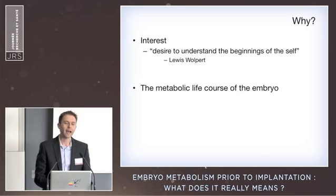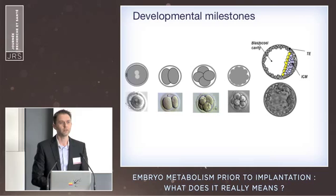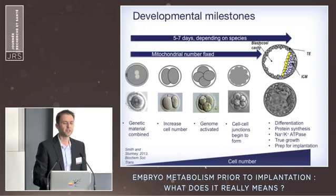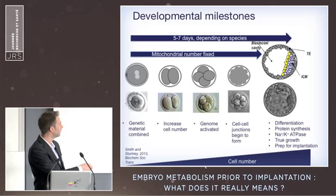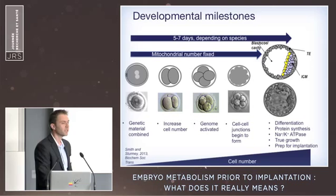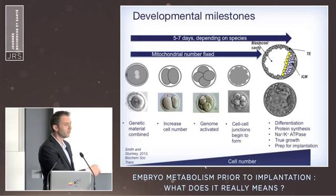How does the early pre-implantation embryo generate its energy from zygote to blastocyst? Everyone knows the developmental trajectory: from the zygote through cleavage to forming the blastocyst. There's an enormous amount going on during this period — the combination of genetic material, rapid increase in cell number but without any growth, and at the morula we see formation of cell-to-cell junctions to enable cellular communication. Then at the blastocyst — this beautiful structure many of us are obsessed with — we see cellular differentiation, protein synthesis, true growth.